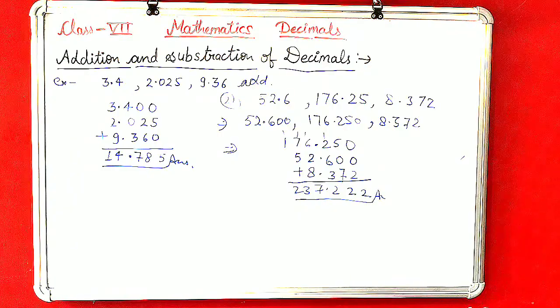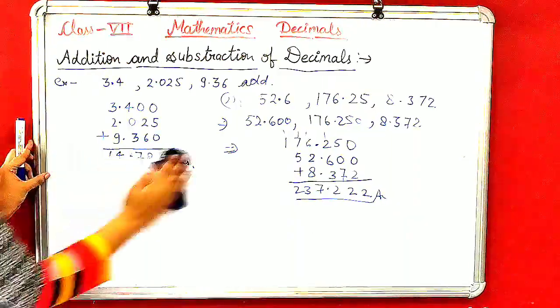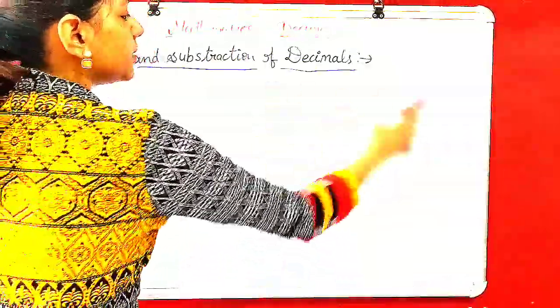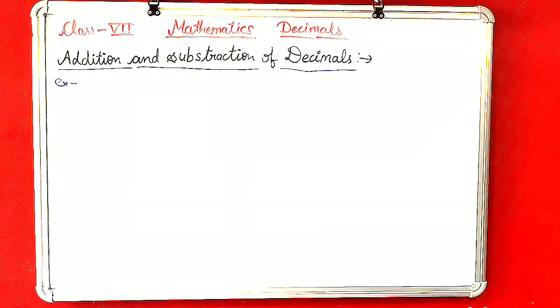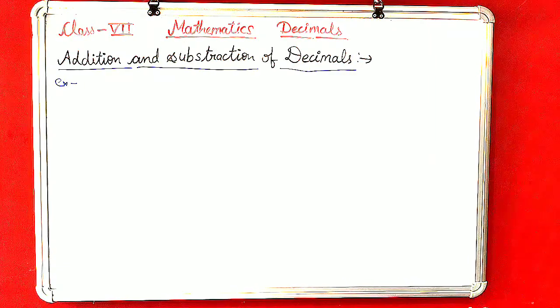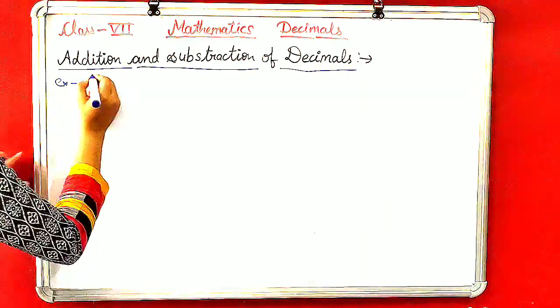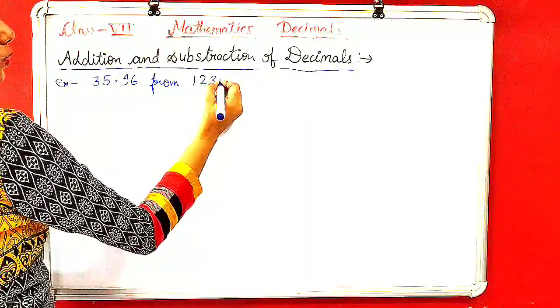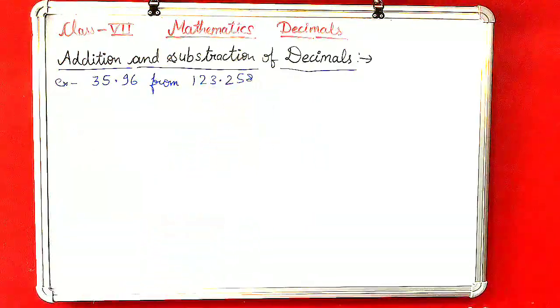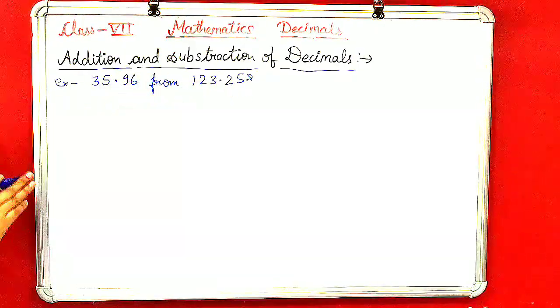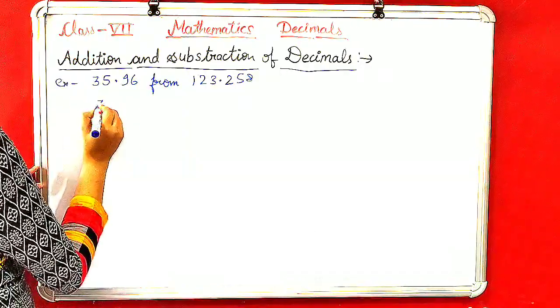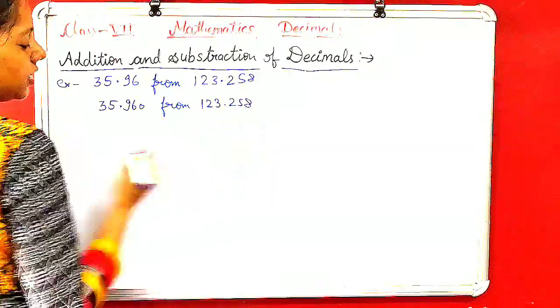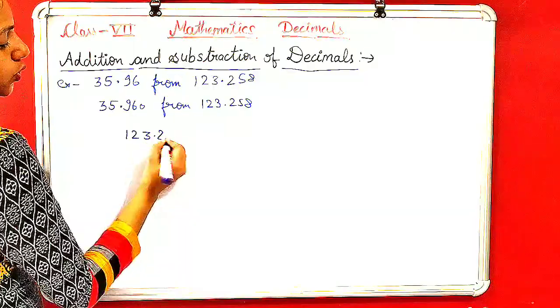Now let's look at subtraction. For subtraction also, convert numbers to like decimals first and identify greater or smaller number. When subtraction uses 'from', like subtract 35.96 from 123.258, the last value comes first. Convert to like: 35.960 and 123.258.